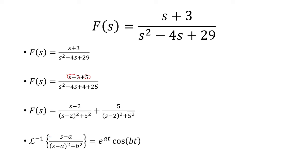From here, we need to use the fact that the inverse Laplace transform of s minus a over s minus a quantity squared plus b squared is equal to e to the at times cosine of bt.